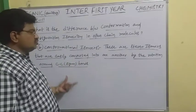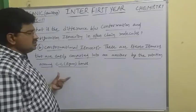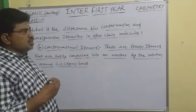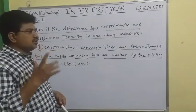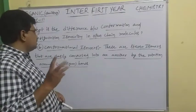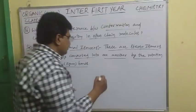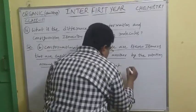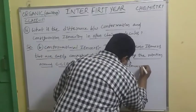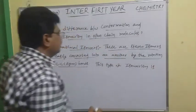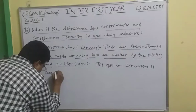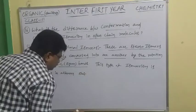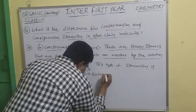Conformational isomerism is easy to convert. Due to rotation around C-C sigma bonds, we can see the conformations of ethane. The first carbon is stable and the second carbon is rotated. This type of isomerism is seen in alkanes. Examples include n-butane and ethane.